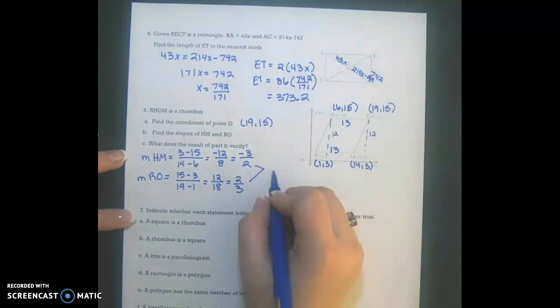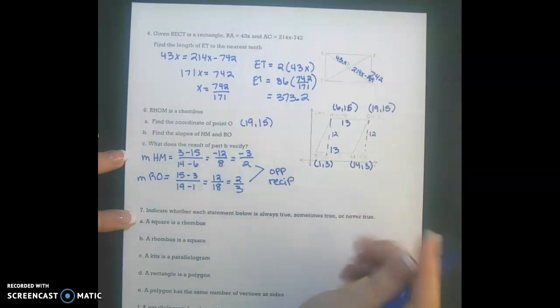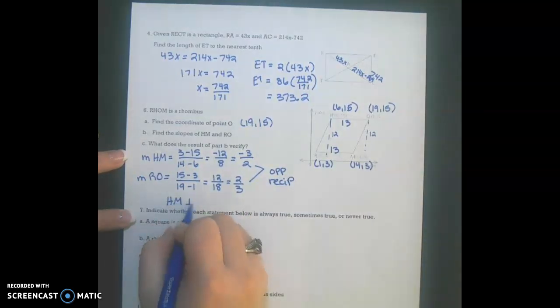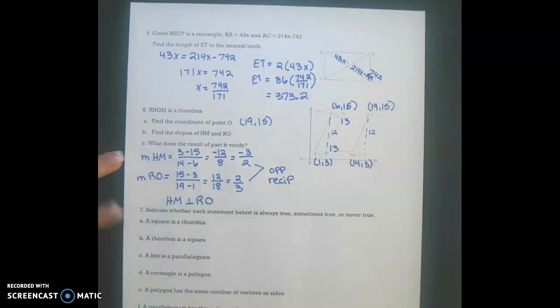Now these values are opposite reciprocals of each other, which means that HM is perpendicular to RO. And that's what this confirms, that my diagonals are perpendicular.